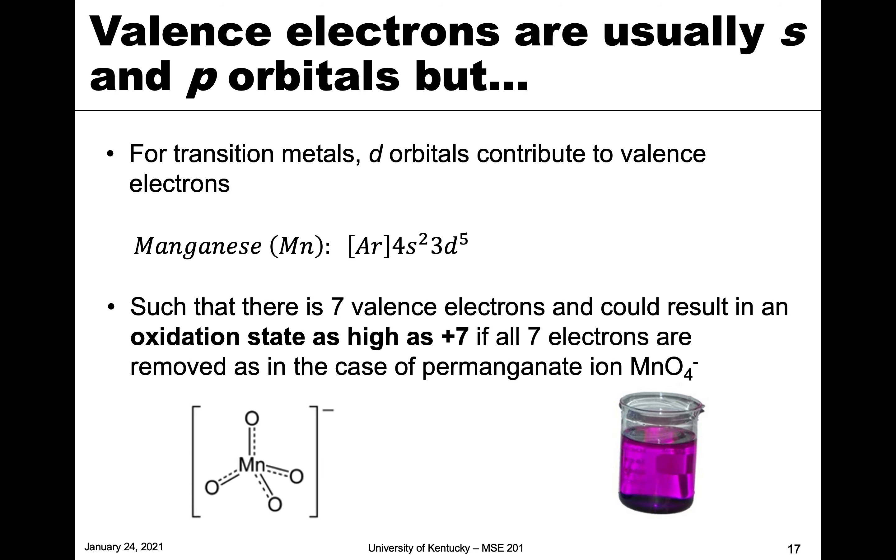We can make some generalities here. Valence electrons tend to be from the S and P orbitals. However, we can occasionally see the D orbitals contribute valence electrons. But for the most part, we see S and P.